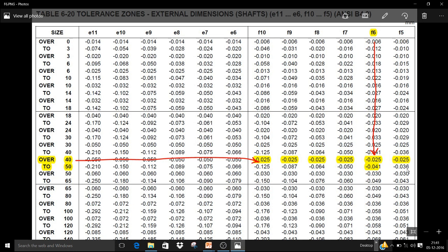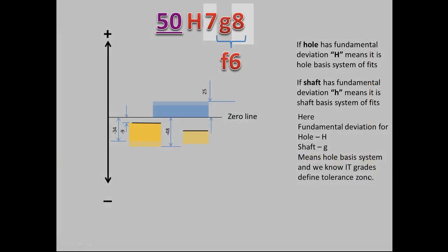So from this chart, you can understand that for a shaft, the upper deviation is fixed and the lower deviation varies according to the IT grade. Conversely, for a hole, the lower deviation is fixed and the upper deviation varies according to the IT grade.